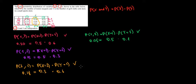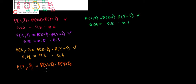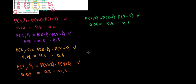Let's keep going. The probability of x equals 2 and y equals 2 should equal the probability of x equals 2 times the probability of y equals 2. The probability of x equals 2 is 0.30, and the probability of y equals 2 is 0.3 as well. Multiplying the two gives 0.09, and that's exactly what we have in the cell. So one more relationship in check.